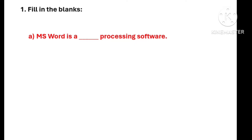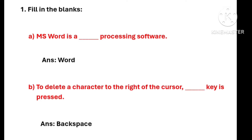MS Word or Microsoft Word is a dash processing software. The correct answer will be: MS Word is a word processing software. Question number B: to delete a character to the right of the cursor, dash key is pressed. The correct answer will be: to delete a character to the right of the cursor, the Backspace key is pressed.